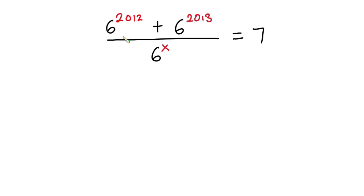Hello everyone. In this video we have this interesting problem: we have 6 to the power 2012 plus 6 to the power 2013, all divided by 6 to the power x, and everything is equal to 7.